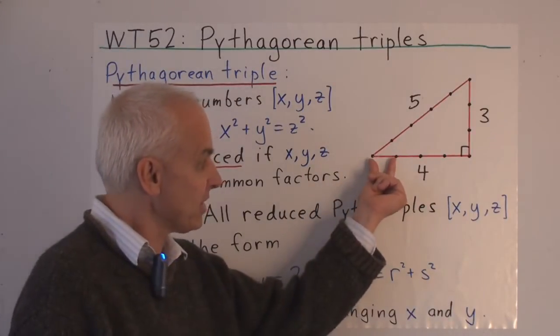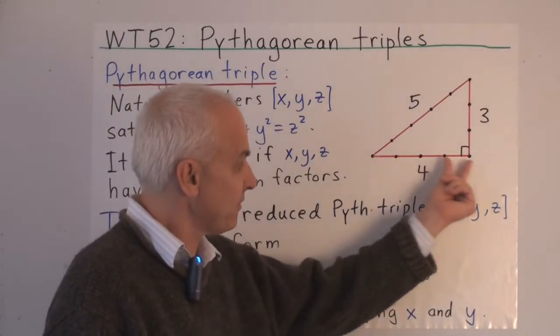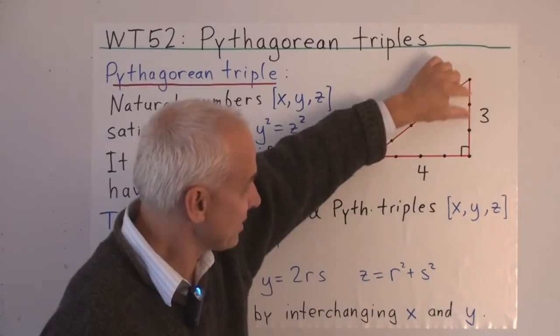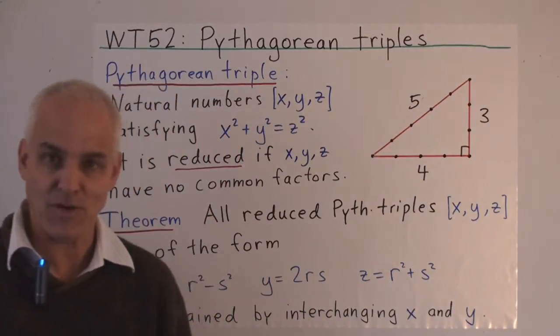So here is the unit. In terms of this unit, this side is 4 times the unit, this side is 5 times the unit, and this side is 3 times that unit.